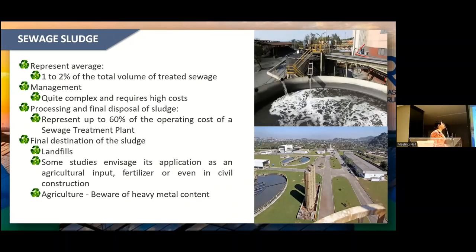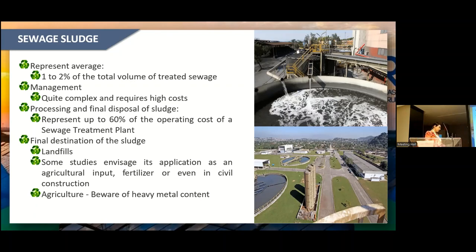Sewage sludge represents one to two percent of the total volume of treated sewage. Its management is complex and requires high cost — its processing and final disposal represents up to 16 percent of the operating costs of a sewage treatment plant. Its final destination can be in landfills, or some studies advise its application in agricultural fertilization and civil construction, though agricultural use requires verification of heavy metal content.